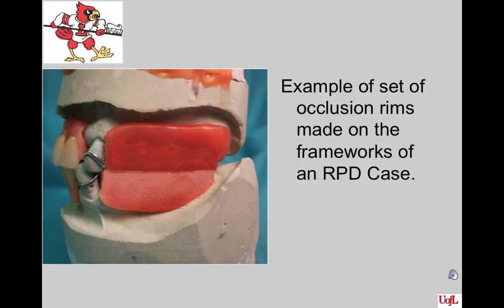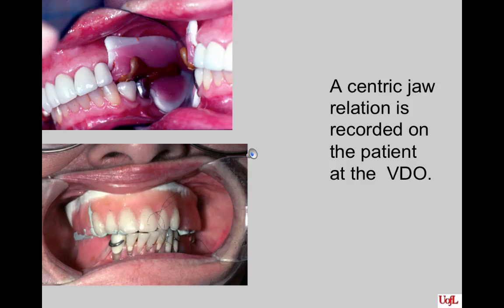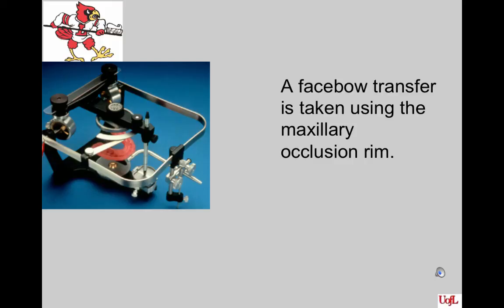Here's an example of two frameworks utilized to retain the occlusion rims. Note also that there are some teeth set in the anterior on this particular case — some people choose to have a little bit of a try-in of the anterior teeth at the time of occlusion rim placement. Rims are placed in the mouth and adjusted to the desired vertical dimension of occlusion, then ready for the jaw registration record. A jaw registration record is then made of the patient at the position determined. A face bow transfer is taken using the maxillary occlusion rim if the upper cast is not already mounted.